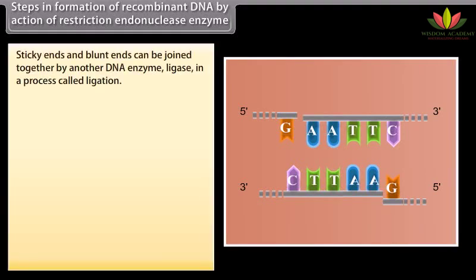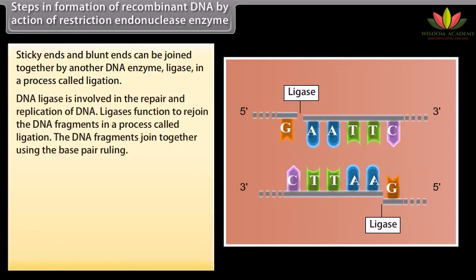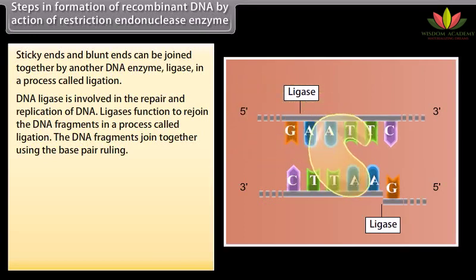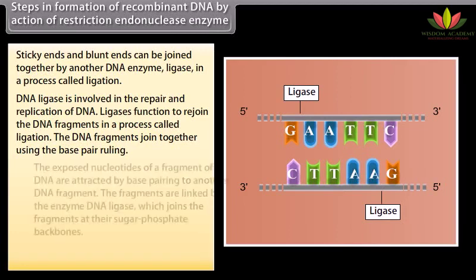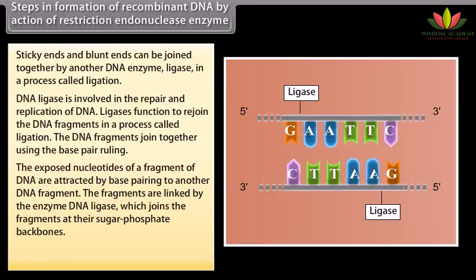Sticky ends and blunt ends can be joined together by another DNA enzyme, ligase, in a process called ligation. DNA ligase is involved in the repair and replication of DNA. Ligases function to rejoin the DNA fragments in a process called ligation. The DNA fragments join together using the base pairing rule. The exposed nucleotides of a fragment of DNA are attracted by base pairing to another DNA fragment. The fragments are linked by the enzyme DNA ligase, which joins them at their sugar phosphate backbones.